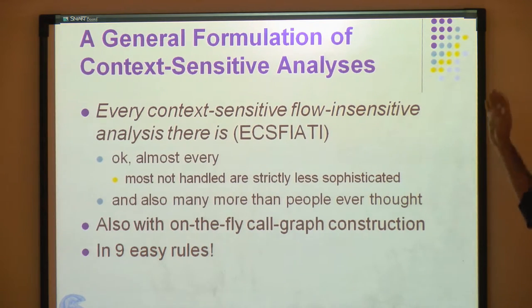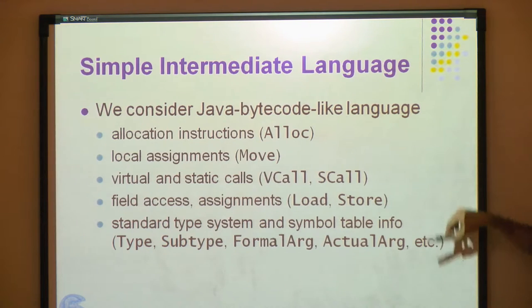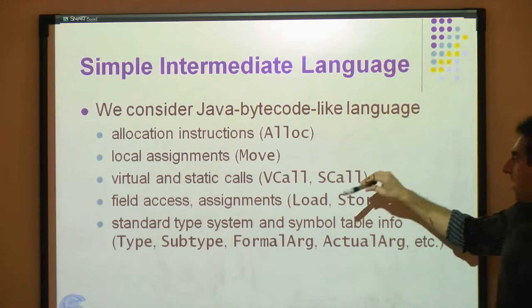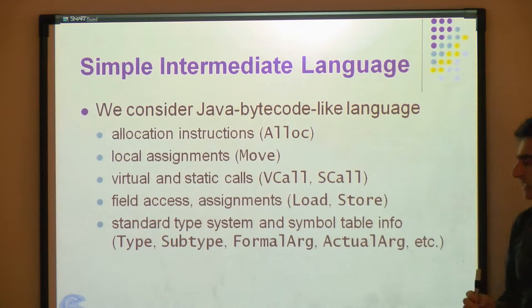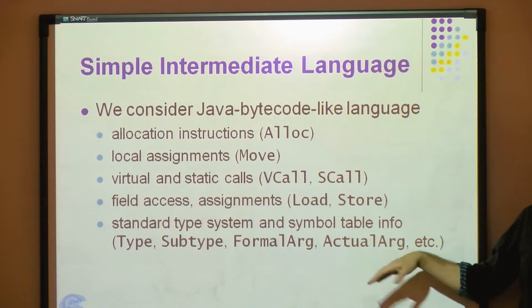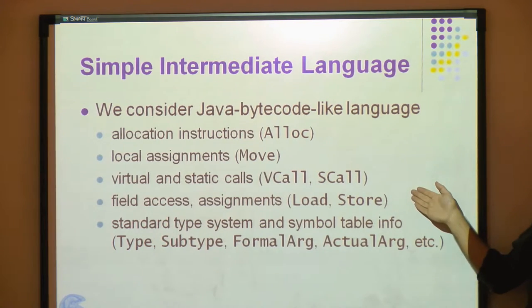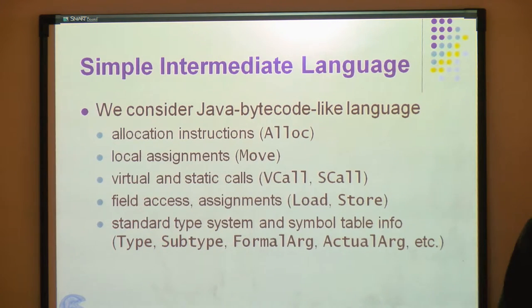All of this will be done in nine easy rules. We will assume a simple intermediate language. All the cases covered here use simple instructions like alloc (direct allocation of objects), move (copy one local variable to another), virtual and static calls, and for the heap: load and store instructions. Standard compiler information like types, subtypes, and formal and actual arguments are trivial inputs we already have. The interesting ones are the instructions in our intermediate language — and it's just these instructions.